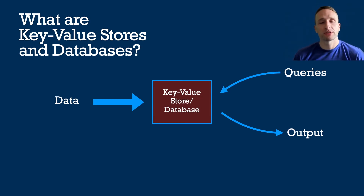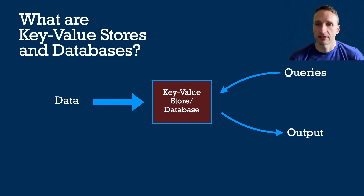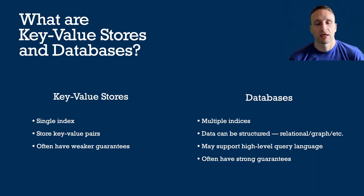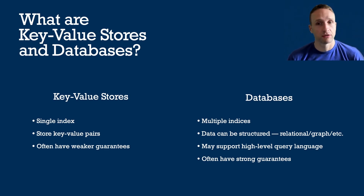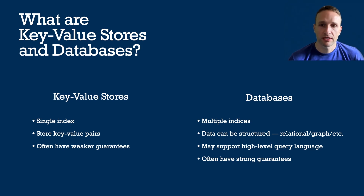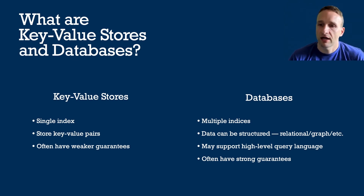So let's start at the beginning. What is a key value store and what is a database? Both are a means to ingest or store data in order to answer queries on it later. Key value stores are simpler — they tend to have a single index, can only store key value pairs, and often have weaker guarantees around durability and isolation. Databases, on the other hand, often span multiple indices, the data can be quite structured, and they may support high-level query languages for more complex queries.